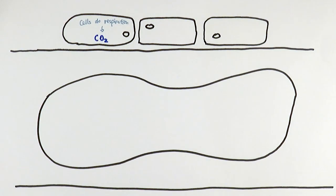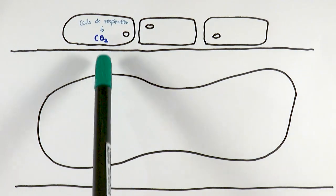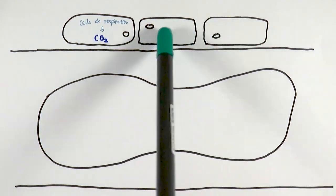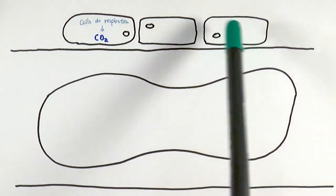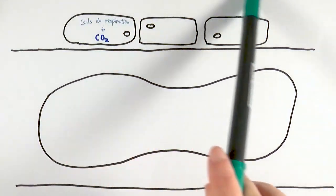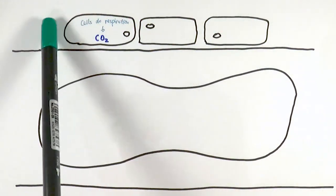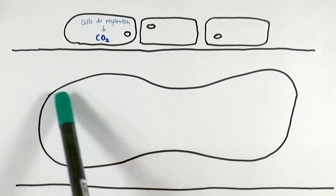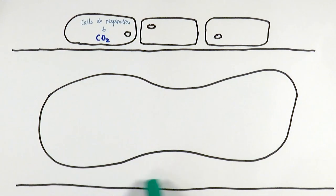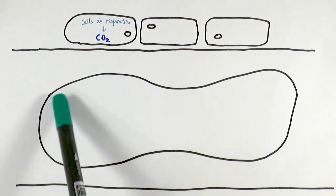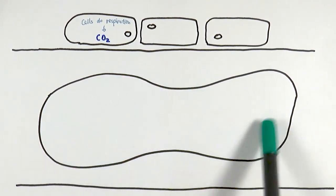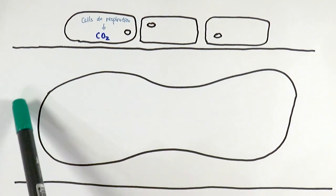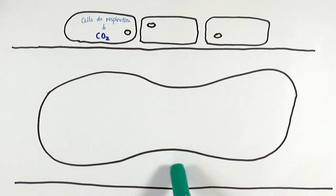We're going to look at the process now. These three shapes represent the cells, and the space around them is the tissue fluid. These two lines represent the capillaries, with the red blood cell inside and the plasma in the empty space around it.